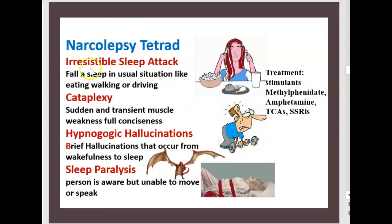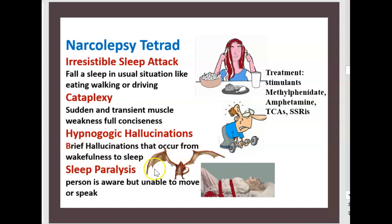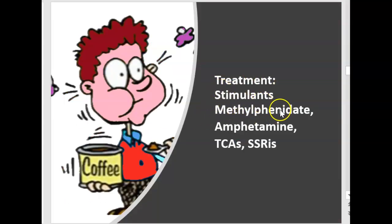Let's review the narcolepsy tetrad. There is irresistible sleep attack — the person falls asleep in situations like eating, walking, or driving. Cataplexy is a sudden and transient muscle weakness but in full consciousness. Hypnagogic hallucinations are brief hallucinations from wakefulness to sleep. Sleep paralysis is being awake but unable to move or speak. Treatment includes stimulants, methylphenidate, amphetamine, tricyclics, and SSRIs.